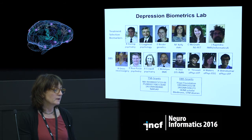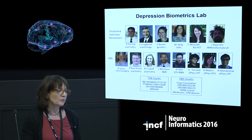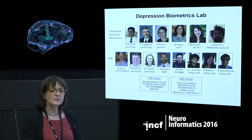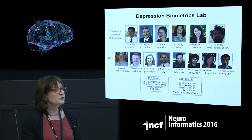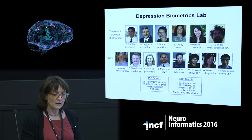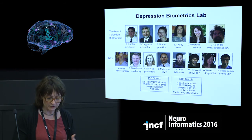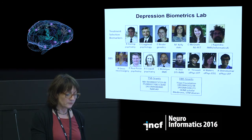I'm going to be talking about work from two parts of the lab: a treatment selection biomarker group. We have a very small group of people who do the imaging, a big group that operates on patients, recruits patients, and treats patients. We have pharmacologists and psychotherapists, but the scientific group is really engineers, imaging scientists, and statisticians — hopefully a familiar kind of group.